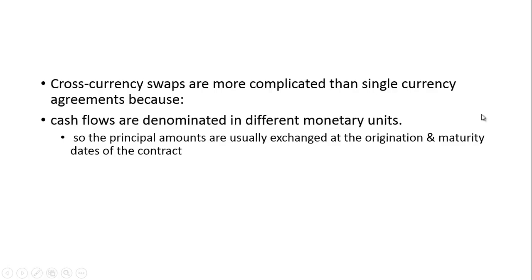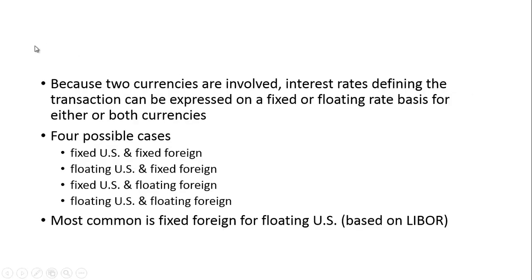Currency swaps are more complicated than single currency agreements because cash flows are denominated in different monetary units. Therefore, the principal amounts are usually exchanged at both the origin and maturity dates of the contract. Because two currencies are involved, the interest rates defining the transaction can be expressed on a fixed or floating rate basis for either or both currencies.